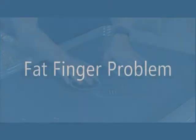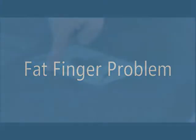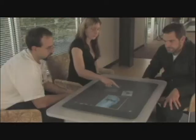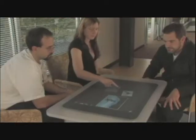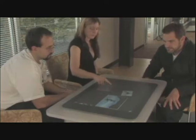Users also encounter the fat finger problem, which describes the difficulty of selecting small objects, or in general the mapping of the user's contact area to a particular point. As we see here, the user's finger is in contact with the photograph, but it is not selected because the contact is being mapped to a point above it.